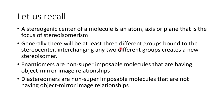Generally, there will be at least three different groups bound to the stereocenter. Interchanging any two different groups creates new stereoisomers. Enantiomers are non-superimposable molecules having an object and mirror image relationship. Diastereomers are non-superimposable molecules with no object mirror image relationship between the two sets of compounds.